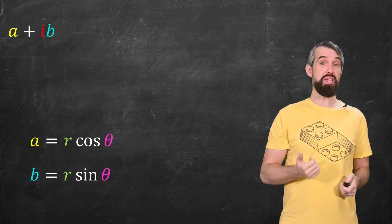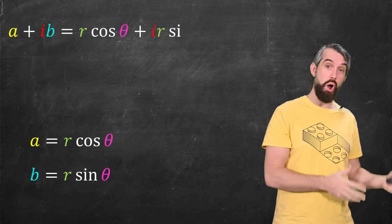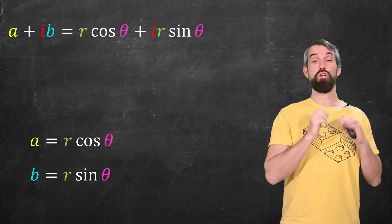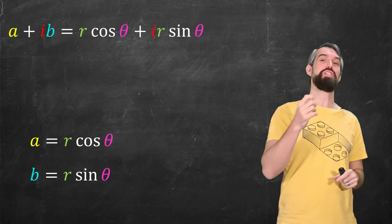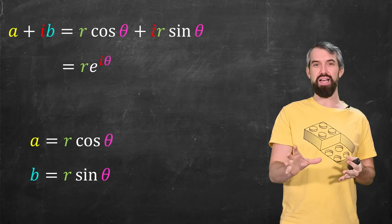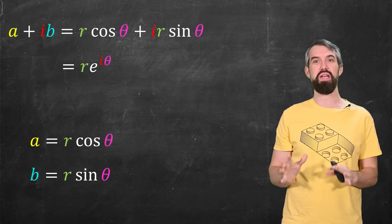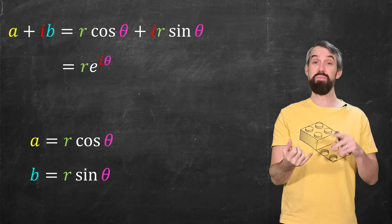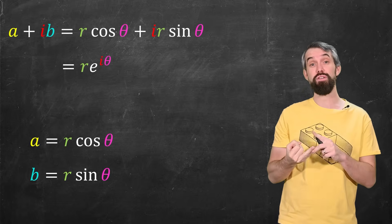Similarly, if I have A plus IB, I can do the same change of variables. I get R cosine theta plus I times R sine of theta. And there's this incredible formula, Euler's formula, that allows you to take cosine plus I sine theta, and rewrite it as E to the I theta. I've done that in a previous video, so I won't repeat it here. But this is called the polar form of the complex numbers. And it basically means you've got the stretching factor R and this rotation factor theta.